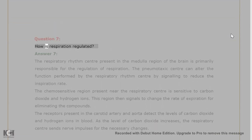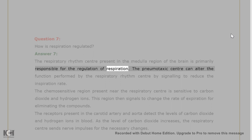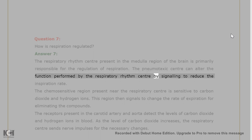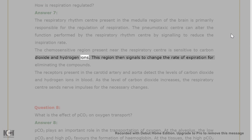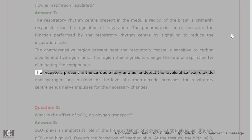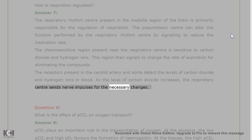Question 7: How is respiration regulated? Answer 7: The respiratory rhythm center in the medulla region of the brain is primarily responsible for regulation of respiration. The pneumotaxic center can alter this function by signaling to reduce the inspiration rate. The chemosensitive region near the respiratory center is sensitive to carbon dioxide and hydrogen ions, signaling changes in the rate of expiration. Receptors in the carotid artery and aorta detect levels of CO2 and hydrogen ions, and as CO2 increases, the respiratory center sends nerve impulses for necessary changes.